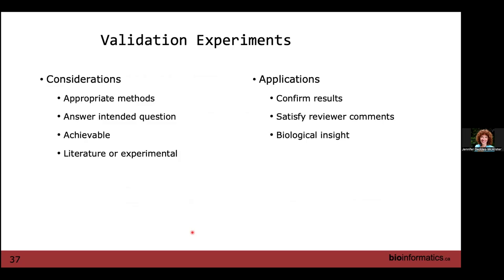The last point I want to talk about is validation experiments — really, how can I get around doing a Western blot. You have to think about what are the appropriate methods for validating your experiments. Almost always reviewers will ask for Western blots, and it doesn't always make sense. What is the question they want answered?